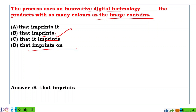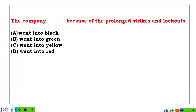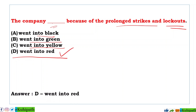Next: The company dash because of the prolonged strikes and lockouts. Options: A: went into black, B: went into green, C: went into yellow, D: went into red. The correct answer is D — 'went into red'. The company went into red because of the prolonged strikes and lockouts. 'Went into red' means the company faced financial loss due to the strikes and lockouts.